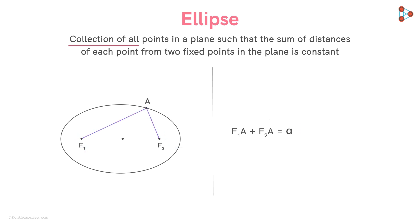Then the ellipse is the collection of all the points whose sum of the distances from the foci is that constant.